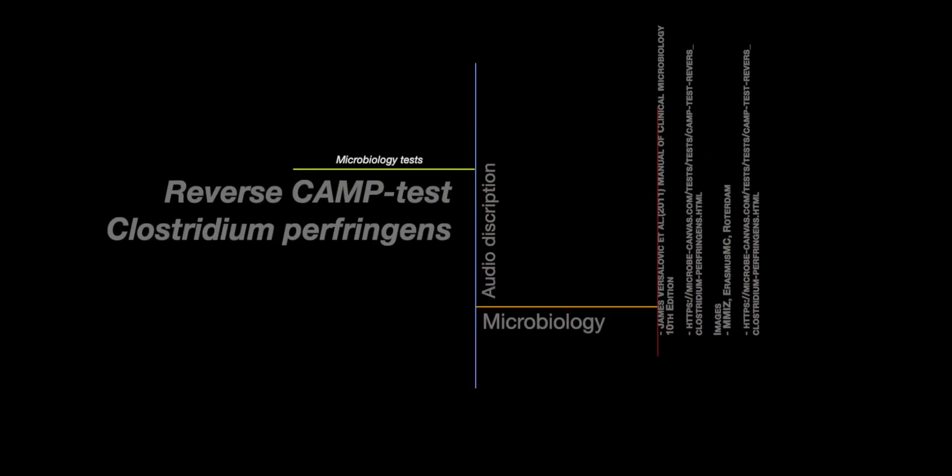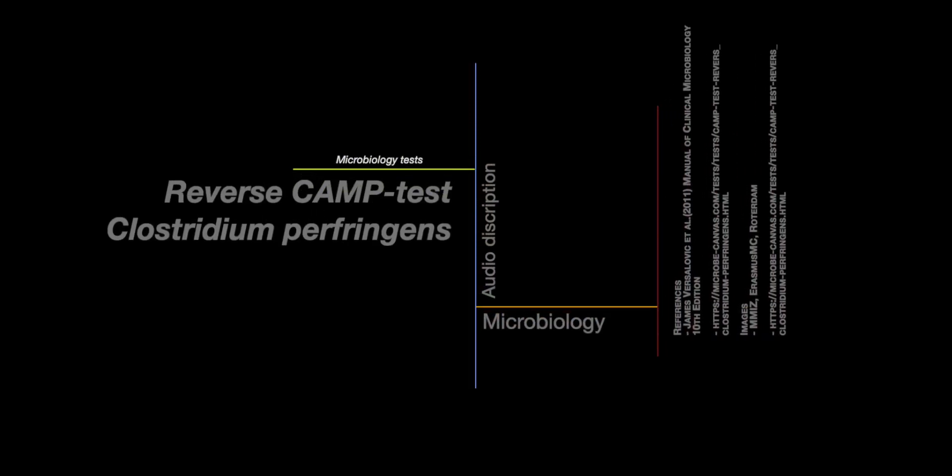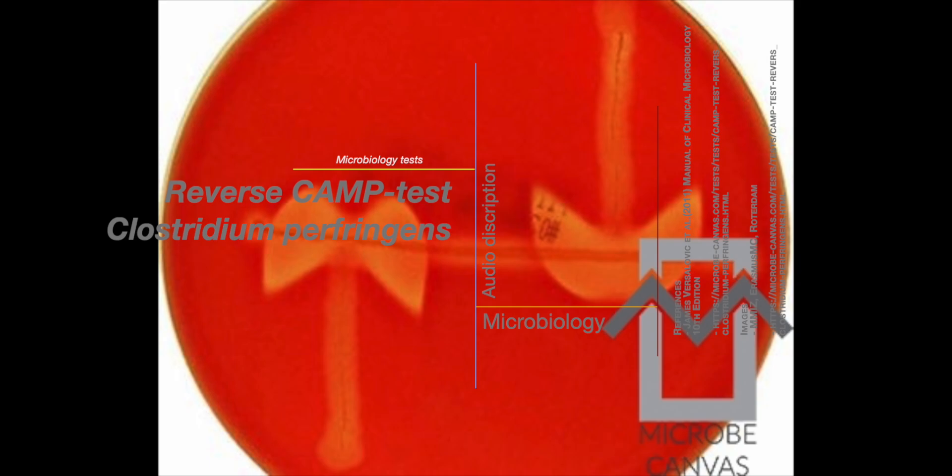Learn how to perform the reverse CAMP test to identify Clostridium perfringens. This microbiology technique is essential for differentiating C. perfringens from other Clostridium species. Watch this video to see a demonstration of the test and learn about the science behind it.